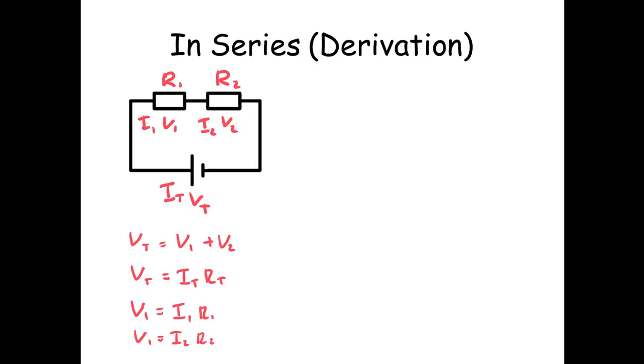V2, sorry, there's a slight little mistake there. V2 equals I2 times R2. So Vt is equal to I1R1 plus I2R2 which is equal to ItRT. But we know the current everywhere is the same. So It equals I1 which is equal to I2.